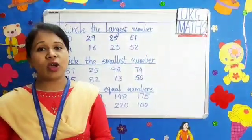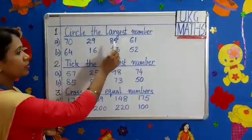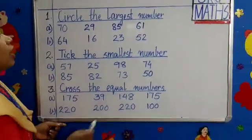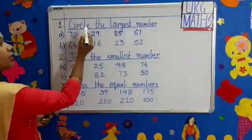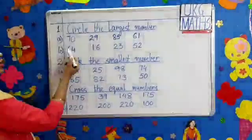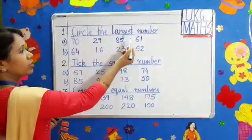Moving on to the next topic. Now we are going to learn largest numbers, smallest numbers, and equal numbers. Our first question is circle the largest number. Question A: 70, 29, 85, 61.